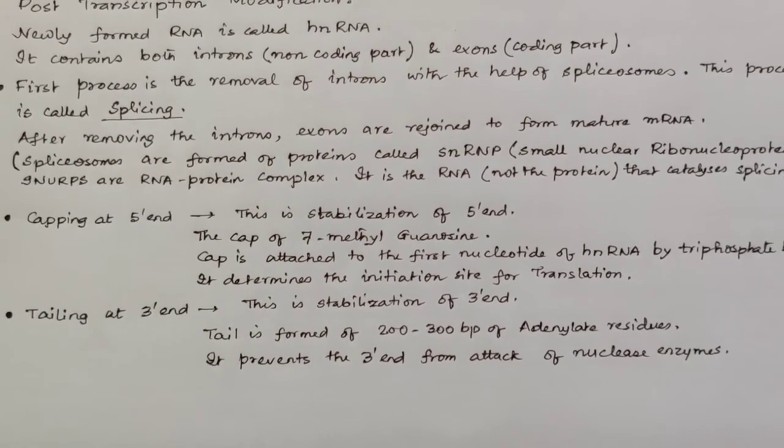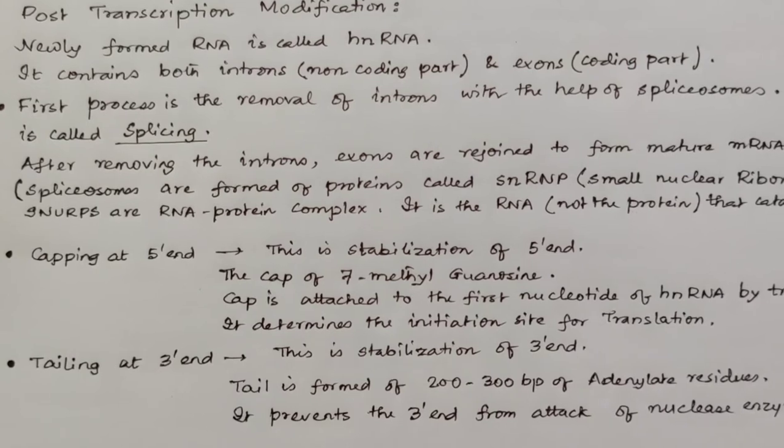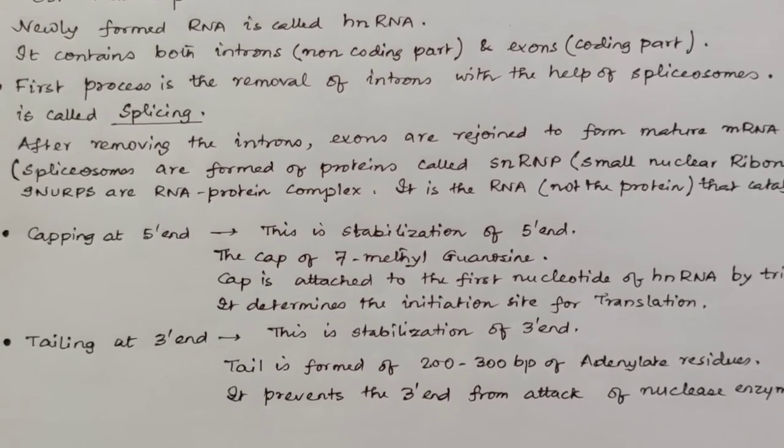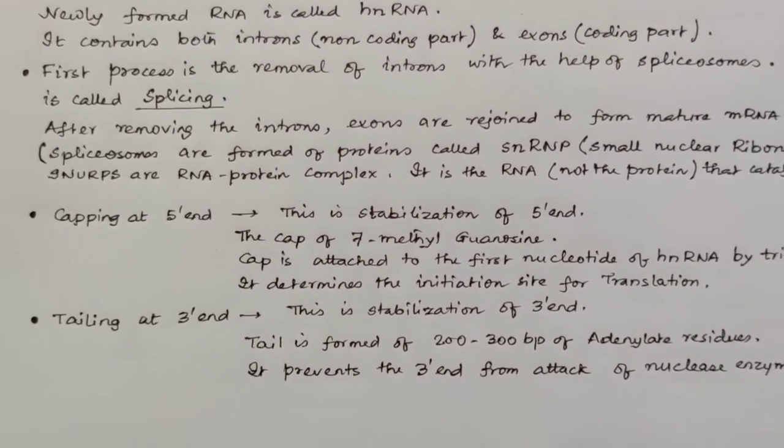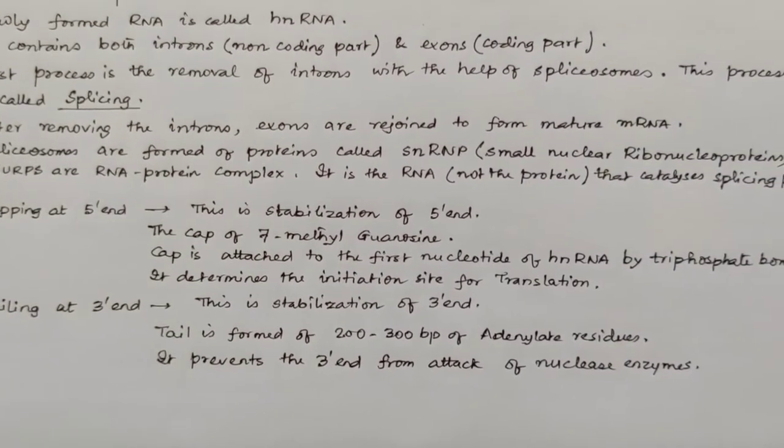Now the very first thing we have to do is remove these introns, which are the non-coding part, because we don't require them for translation. The very first process is the removal of introns with the help of spliceosomes. This process is called splicing.